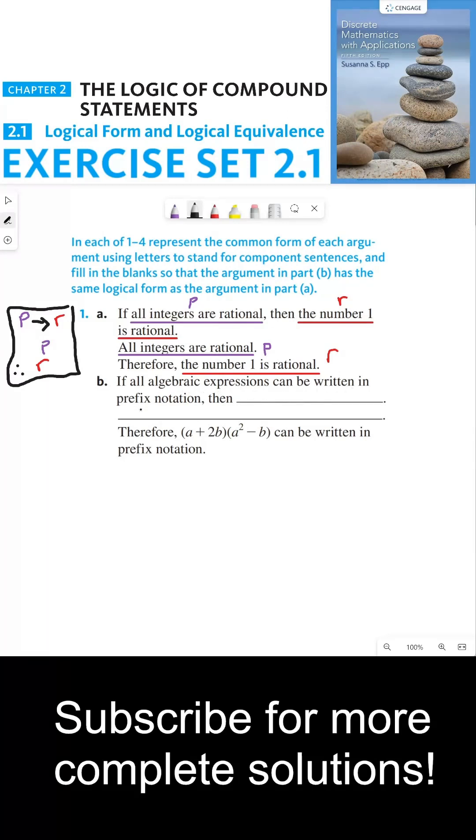If all algebraic expressions can be written in prefix notation, then blank. If we want to reflect the same logical form from part a, I'm going to represent this hypothesis in purple just like it was in part a. We'll figure out what to put in the blank later. The next statement says 'therefore a+2b×(a²-b) can be written in prefix notation', so this is the conclusion here, which is the red part in part a, so I'm going to underline this part in red.